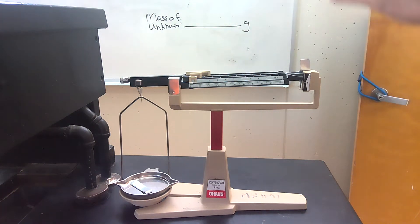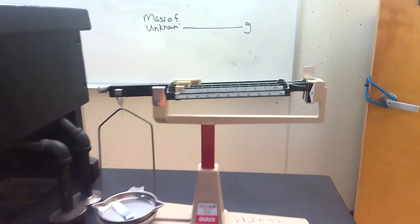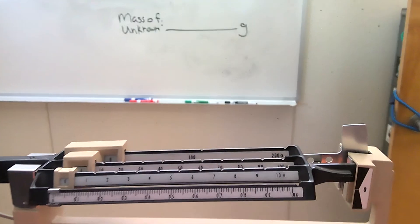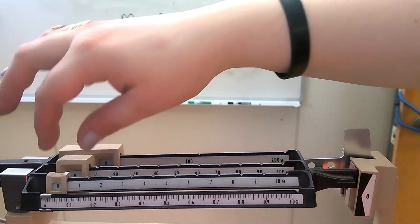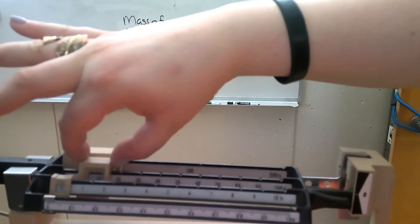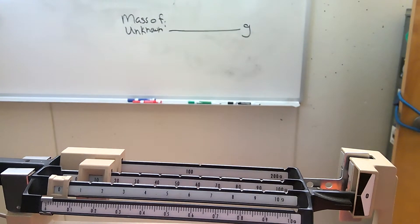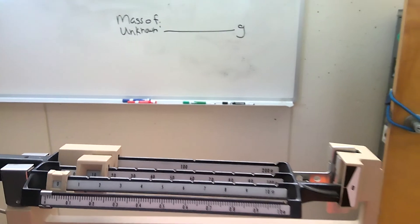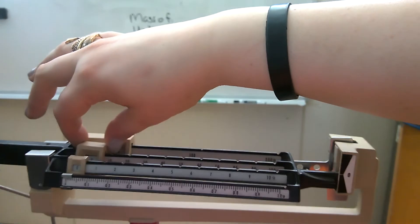So obviously we can tell that that metal, it's probably not anywhere near the hundreds, so we're going to leave the back rider alone. I'm going to move in just a little bit so you guys can see. So I'm going to move the tens to the 10 window. Our arrow went down, which means that this is not anywhere near 10. So we're going to move it back to zero.